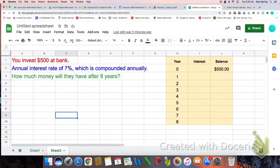We want to figure out how much money I'm going to have after 8 years. This is a simple table that you can make on Google Sheets. It's showing me at zero years, my balance is $500.